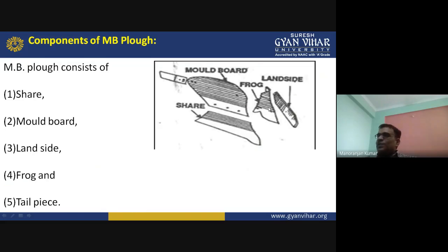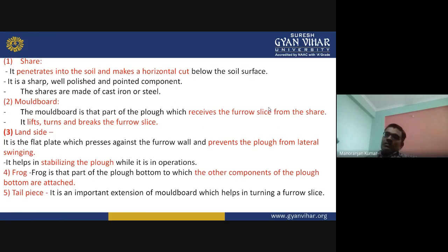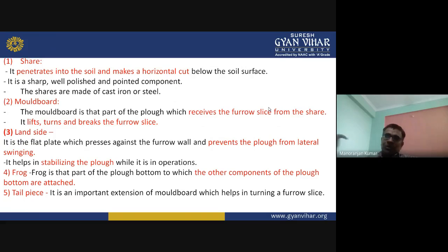The other component is the tailpiece. It is an important extension of the moldboard which helps in turning the furrow slice. These are the main components of the MB plough.